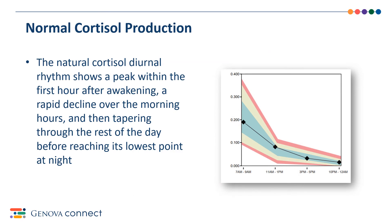Here we see an ideal circadian pattern. The cortisol curve peaks between 7 and 9 a.m. and declines throughout the rest of the day, hitting its lowest point at night. Ideally, your levels, represented with the black diamonds, should fall within the green portion of the diagram. If it falls in the yellow portions, it is not optimal, either low or high. If within the red or white areas, your values are outside the expected range for optimal health.